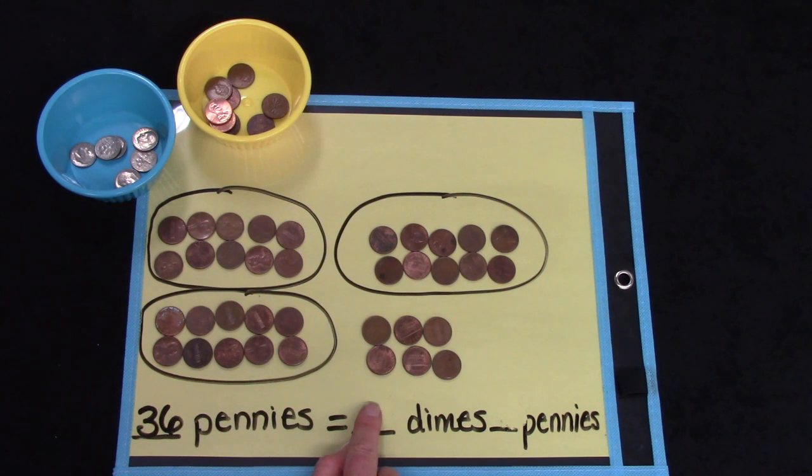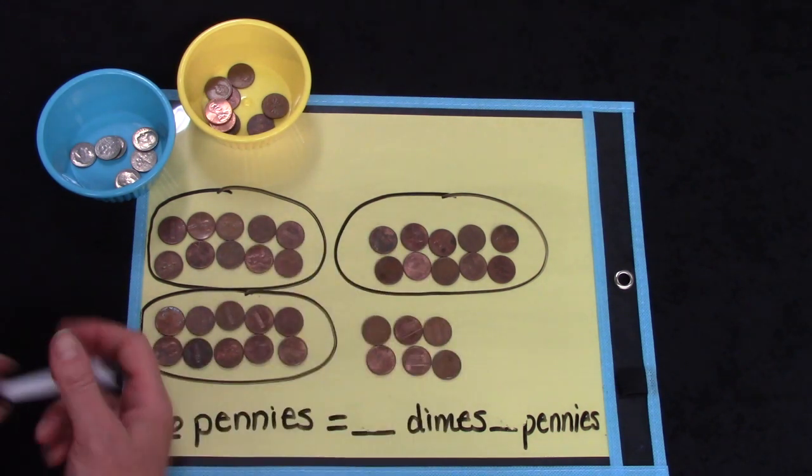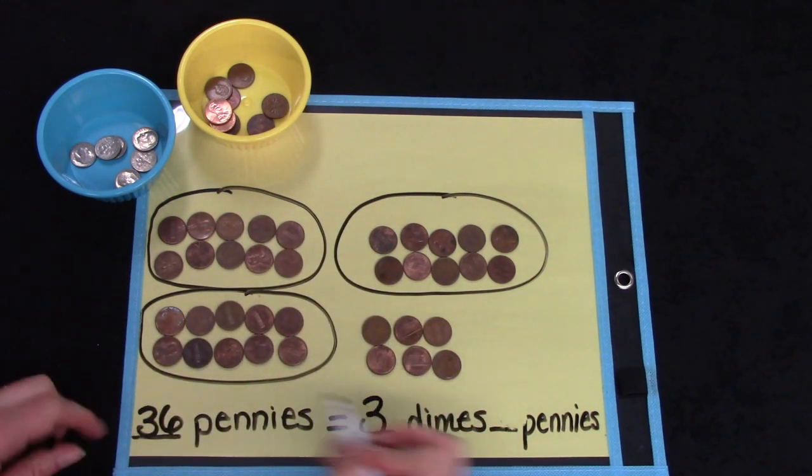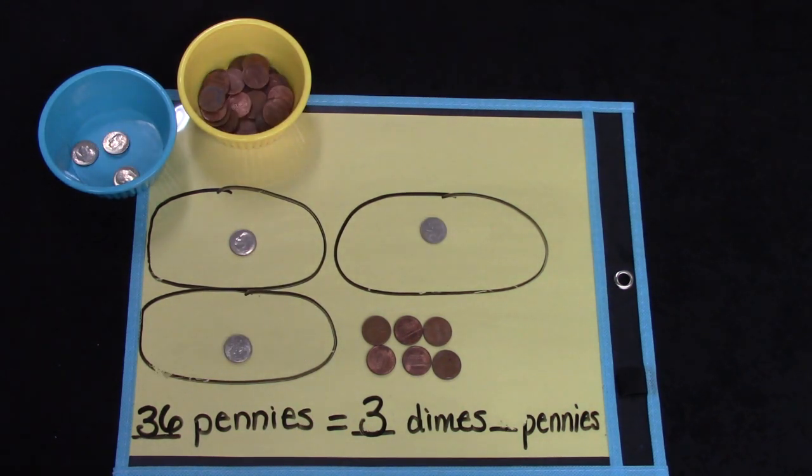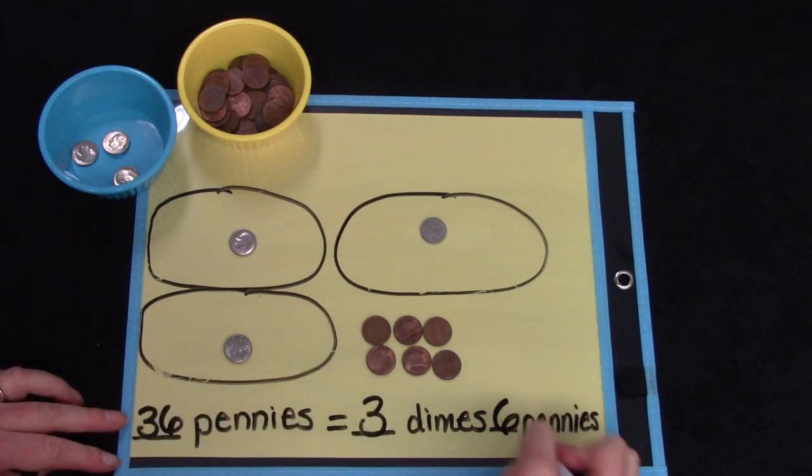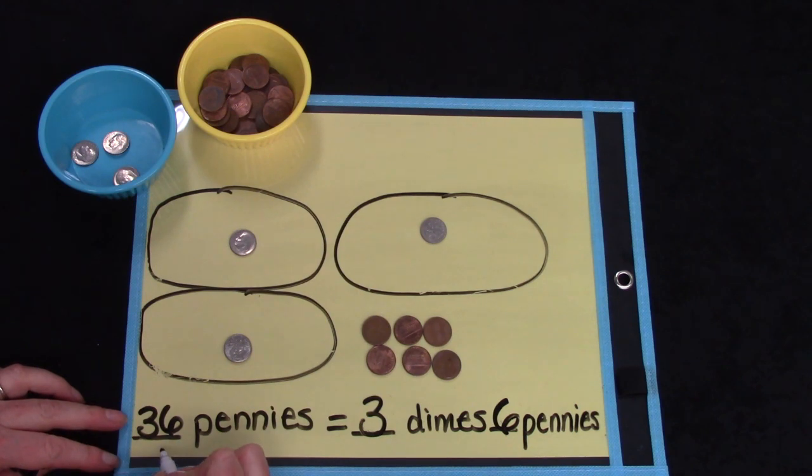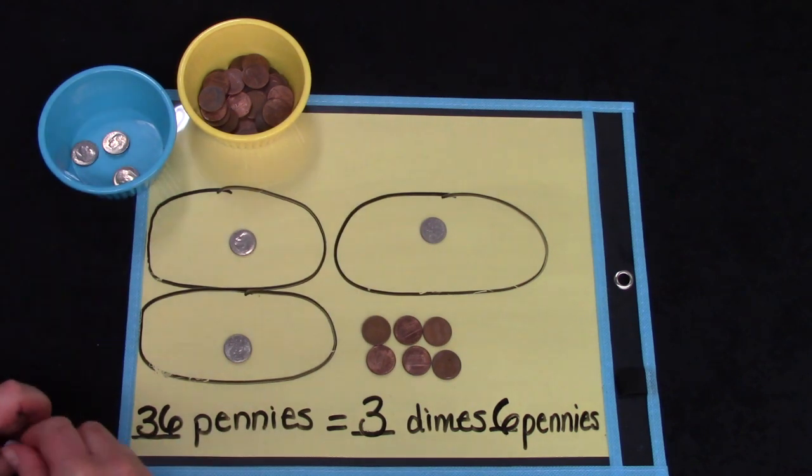I can trade these pennies for 3 dimes. Let's trade them. 1, 2, 3. 3 dimes and 6 pennies is the same as 36 pennies. Let's try this one more time.